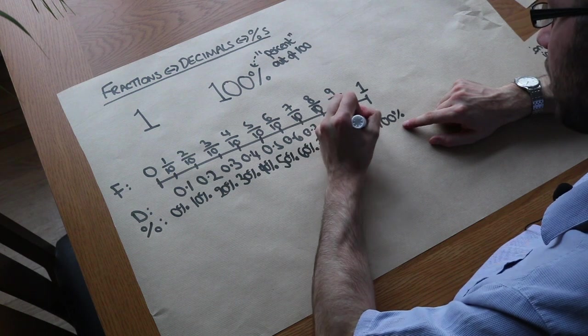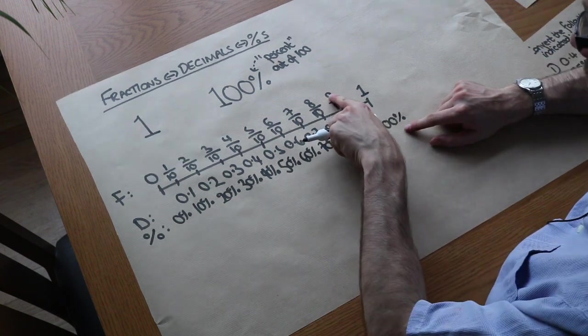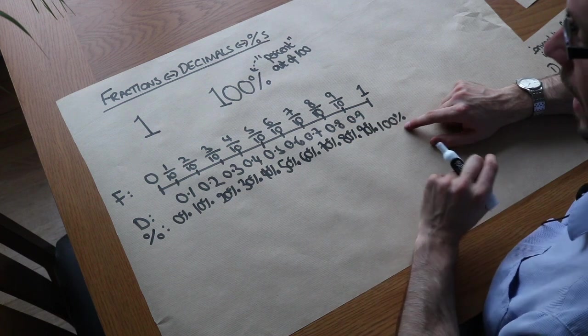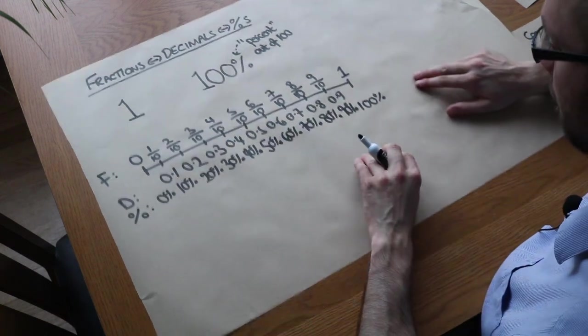90%. So we've got the correspondences between the fraction form, the decimal form, and the percentage form when we divide a whole into tenths.